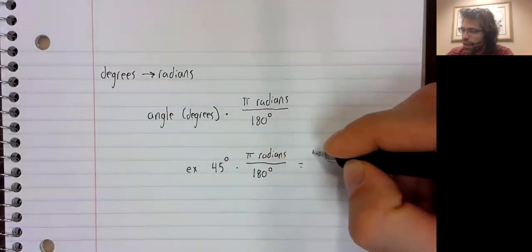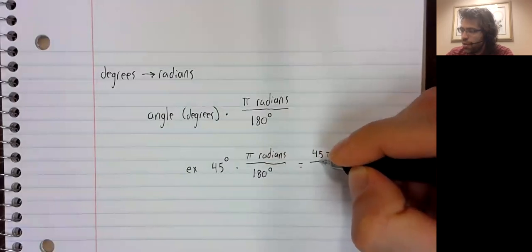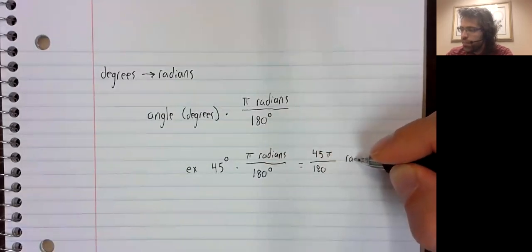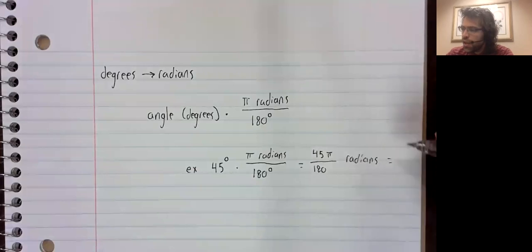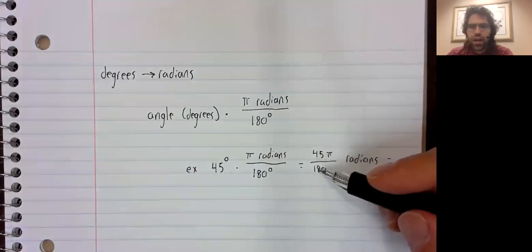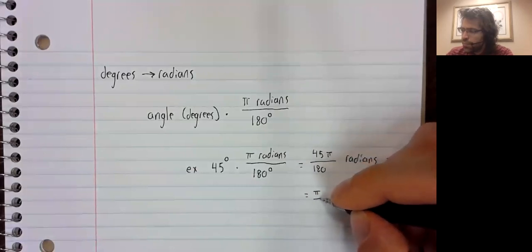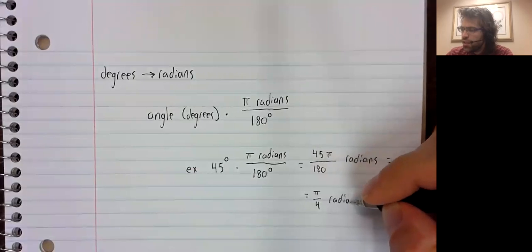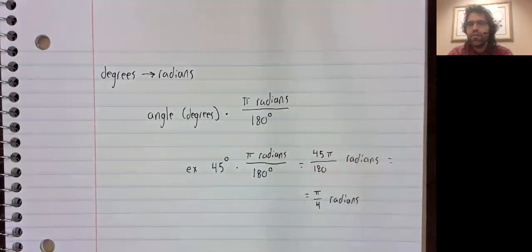And we get 45 pi over 180 radians. And 45 divided by 180 is indeed pi divided by 4.